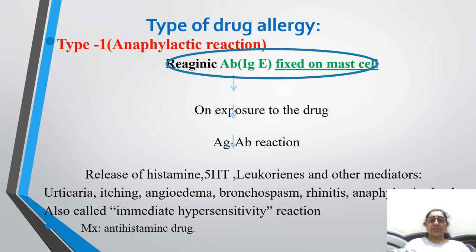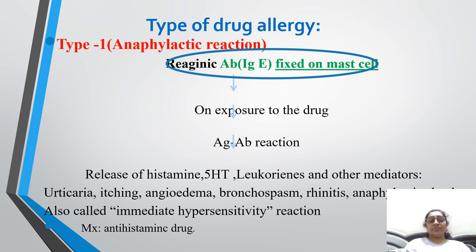Type 1 is the anaphylactic reaction. Antibody fixes on the mast cell. On exposure to the drug, an antigen-antibody reaction occurs and causes release of histamine, 5-HT, and leukotriene-like mediators. Ultimately, symptoms appear such as urticaria, itching, angioedema, bronchospasm, rhinitis, and anaphylactic shock can occur.